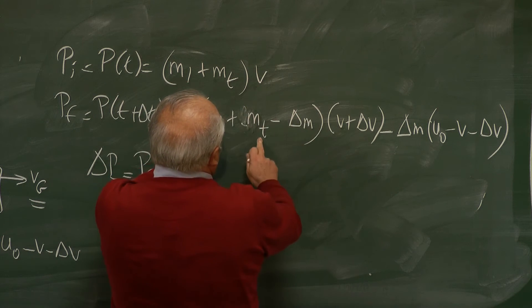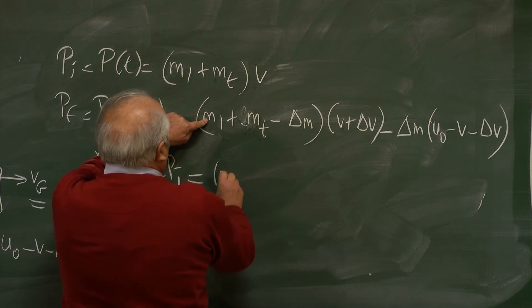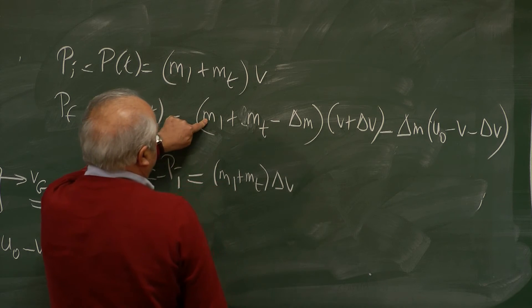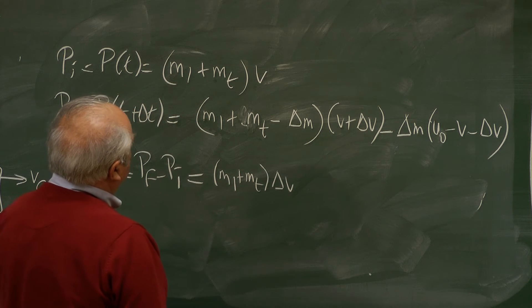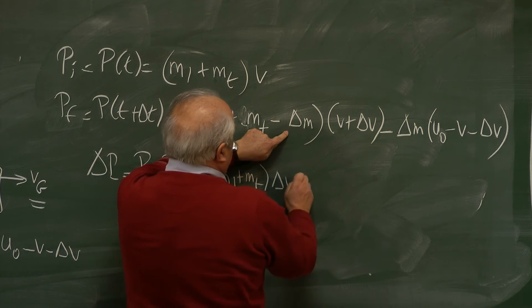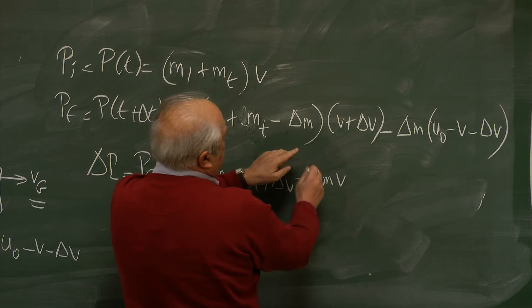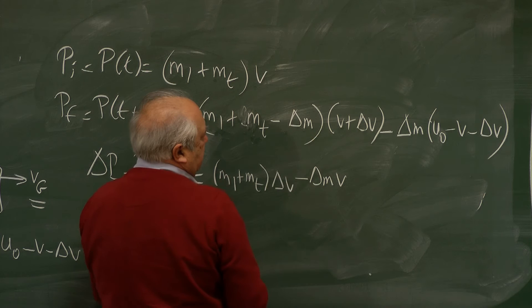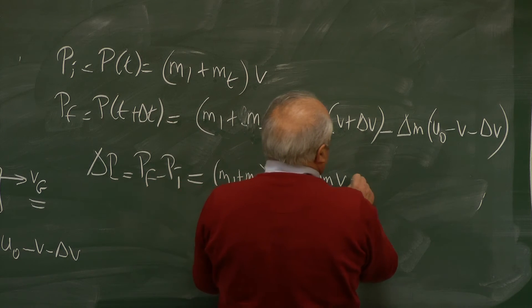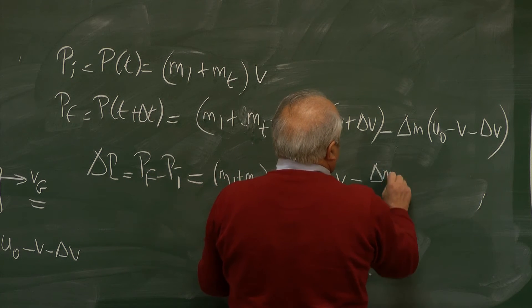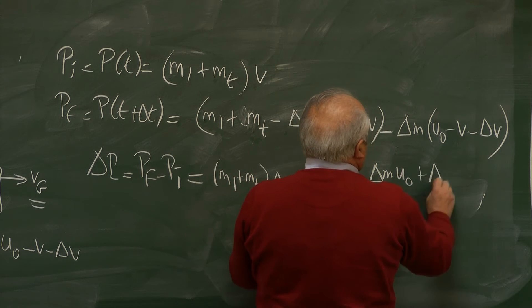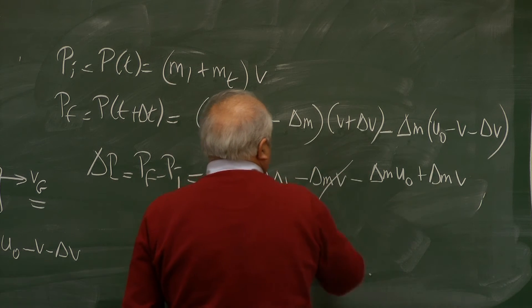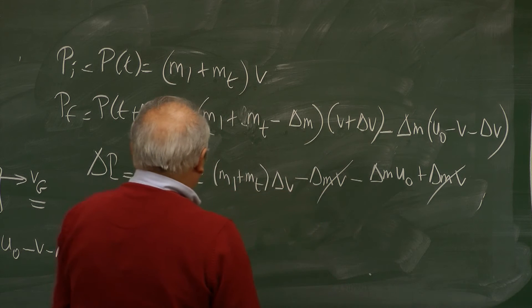This V and that thing cancels. So I have M1 plus MT delta V and minus delta M, V. I ignored the second order term in the small quantities, delta M times delta V. Therefore, minus delta M plus delta M, V. And I again ignore the second order term. As you notice, these things cancel.